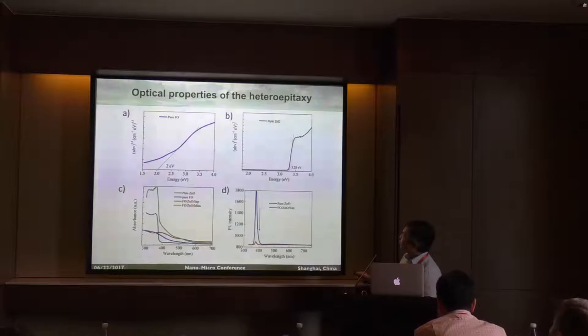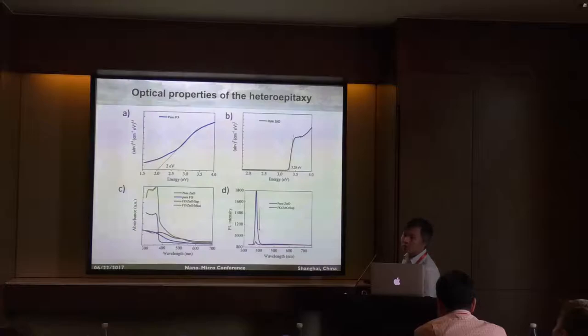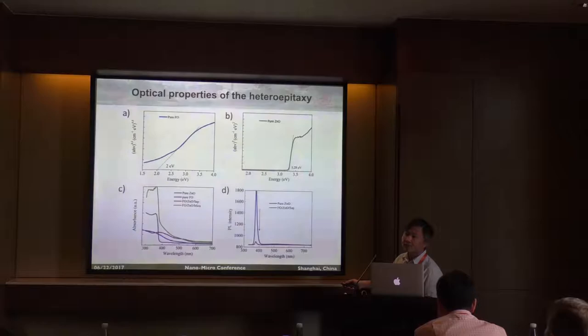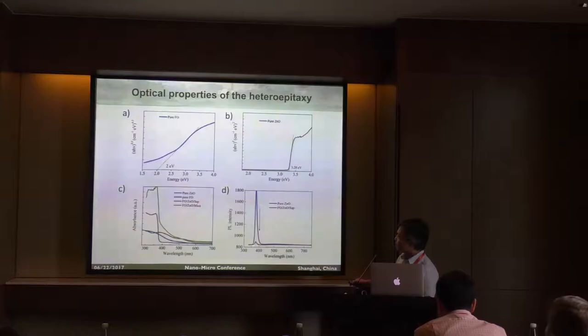We start to check the properties. First, we check the optical properties. For pure zinc oxide, the band gap is around 3.2 eV; for pure iron oxide, it is about 2 eV. When you combine them and check the absorbance, you can clearly see this part is from zinc oxide and this part is from iron oxide. For the pure iron oxide PL signal is very strong, but when you combine iron oxide with zinc oxide, the PL signal is suppressed — that means there may be some charge transfer happening across the interface.